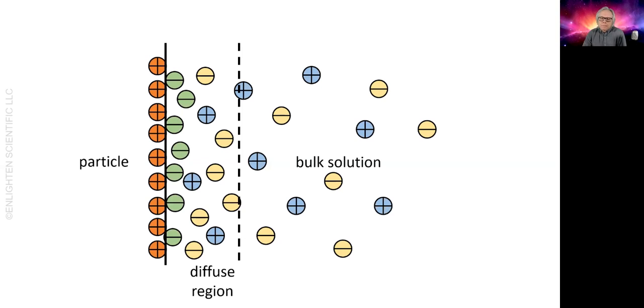This region is a diffuse layer of ions balancing the charge on the particle. So we have a rigid layer associated with the particle surface and tightly bound material, and then a diffuse layer. Combined, we get the diffuse electrical double layer.